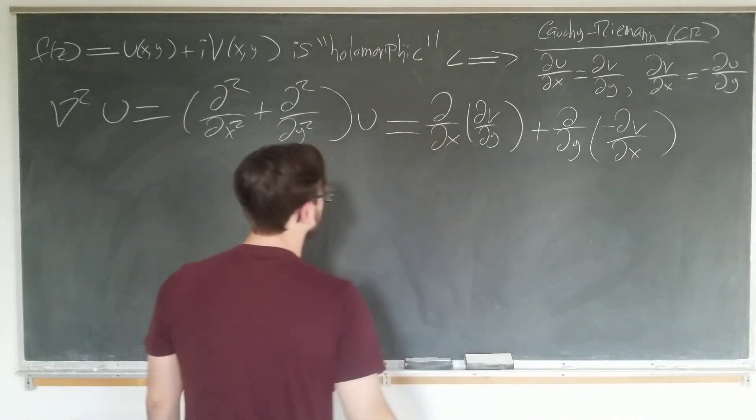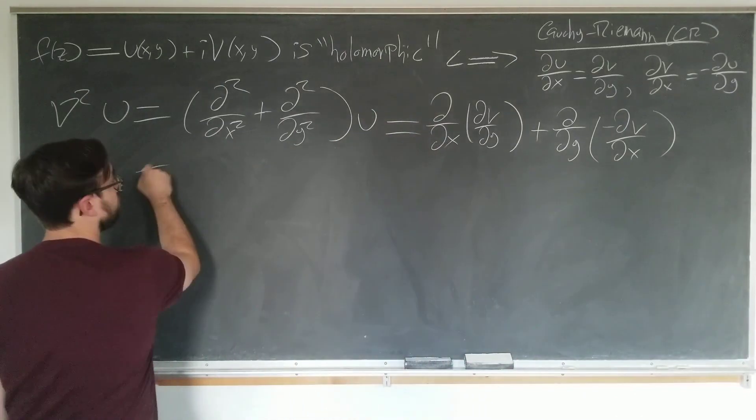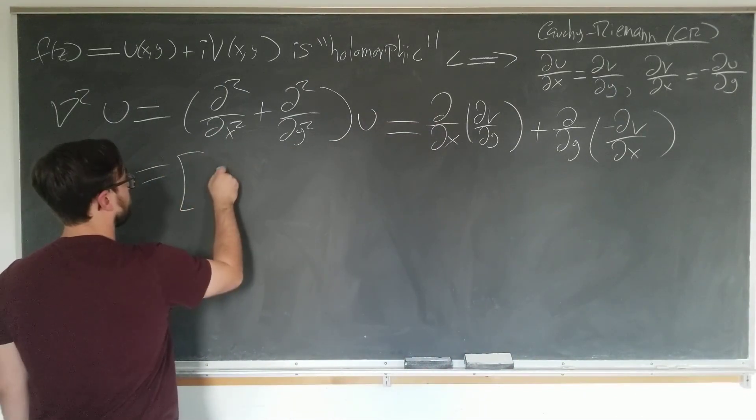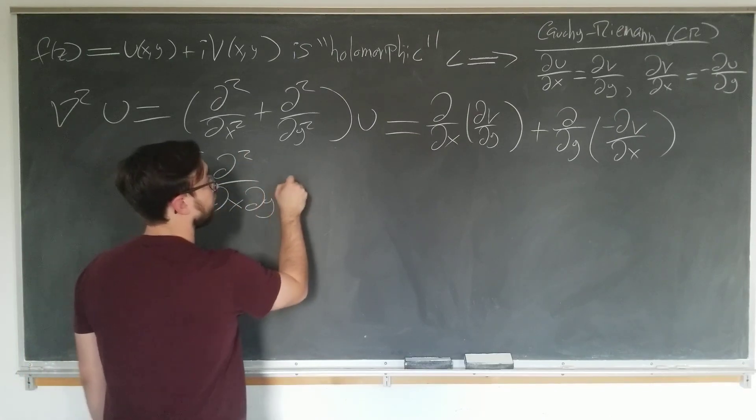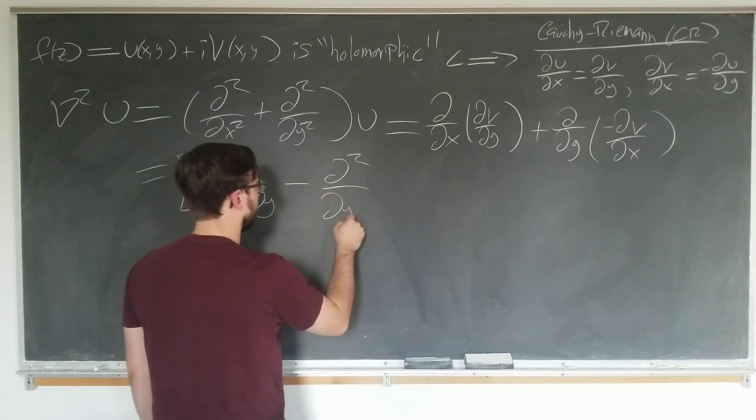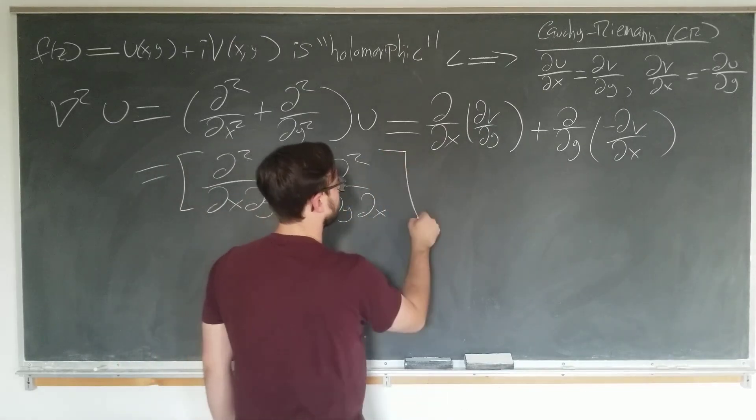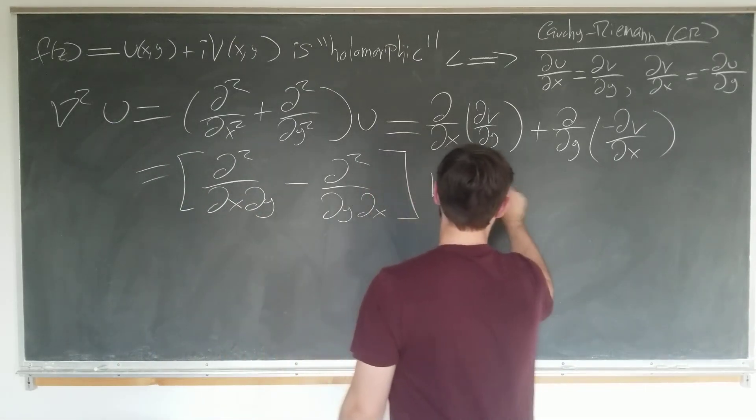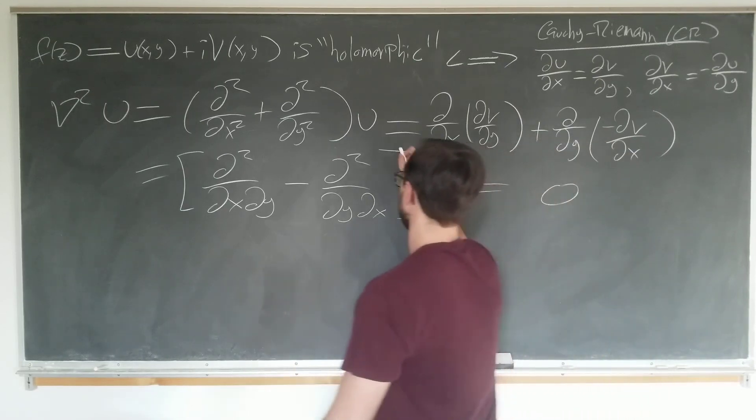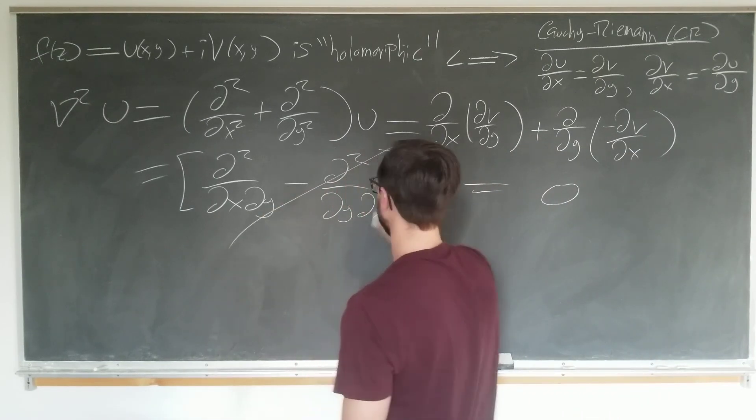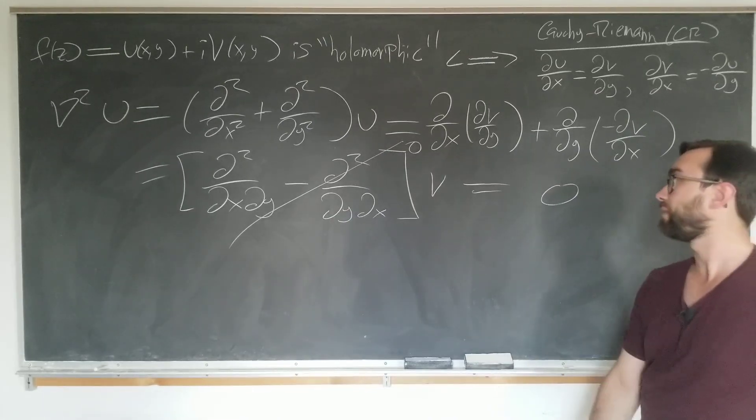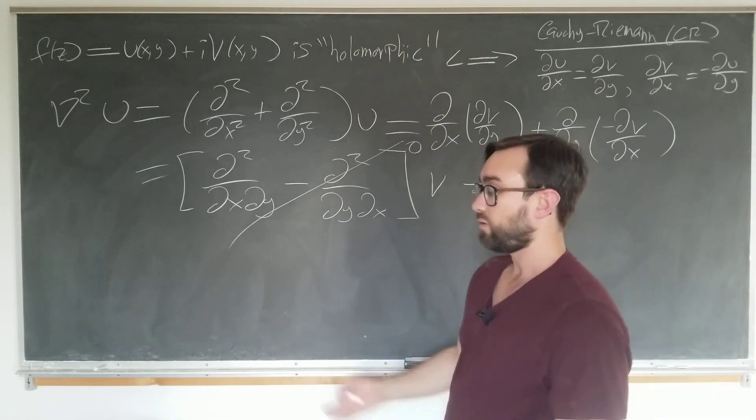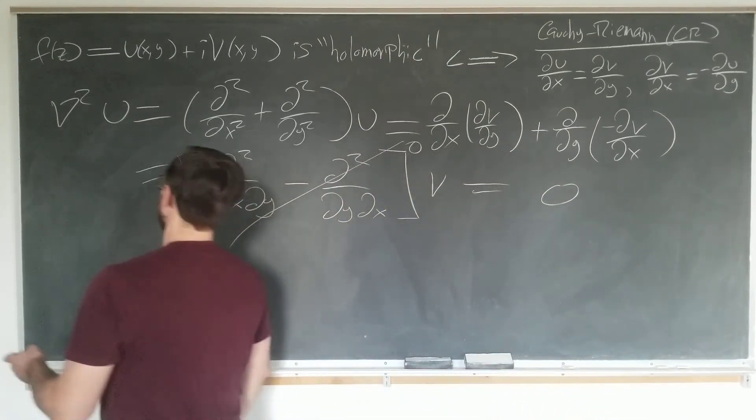And this actually becomes d squared by dx dy minus d squared by dy dx, acting on v, which is, of course, zero, since the differential operator here is zero, since we know that derivatives actually commute. So we're showing that for the first component, the second component is similar, which we'll do here now.